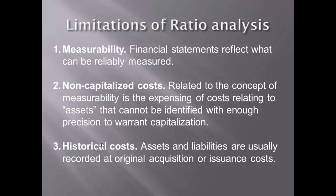Another limitation relates to historical costs. Many assets and liabilities in financial statements are recorded at original acquisition or issuance costs. Subsequent increases or declines in value are very often only recognized if deemed permanent. This implies that the asset and liability amounts used in ratio analysis may not be good indicators of the current market values of these items, limiting the information conveyed by the calculated ratios.